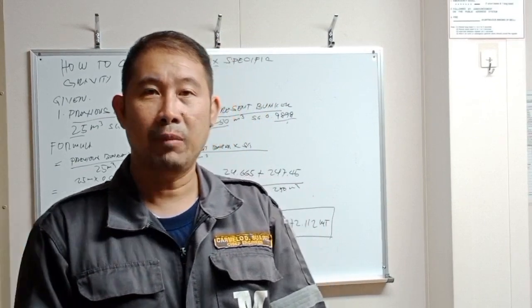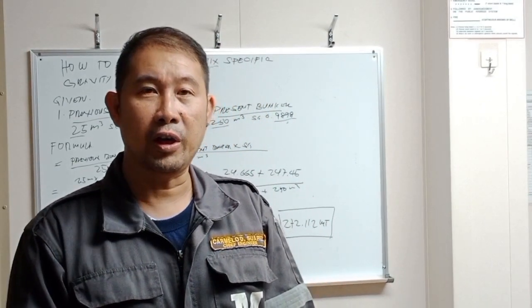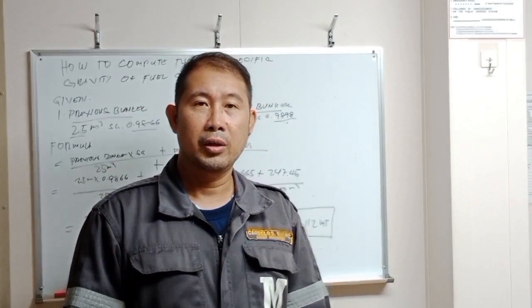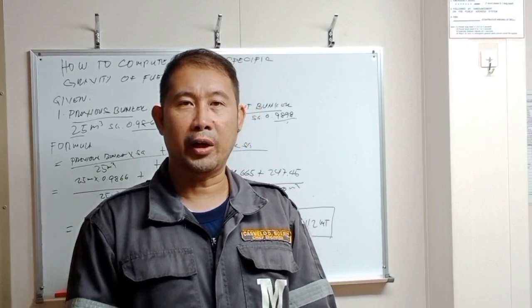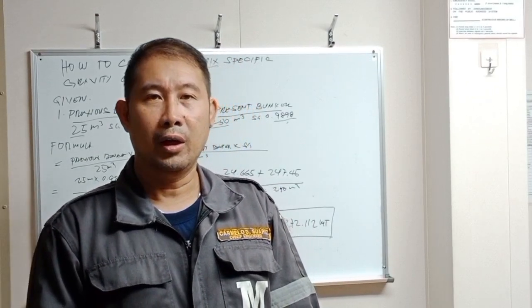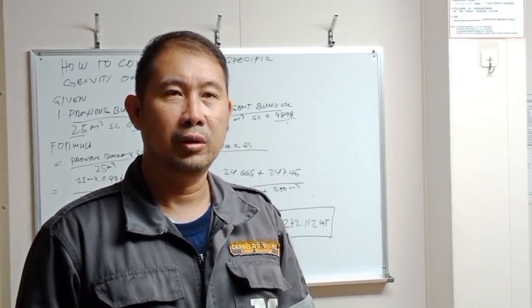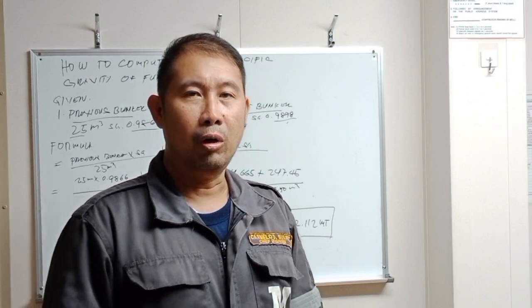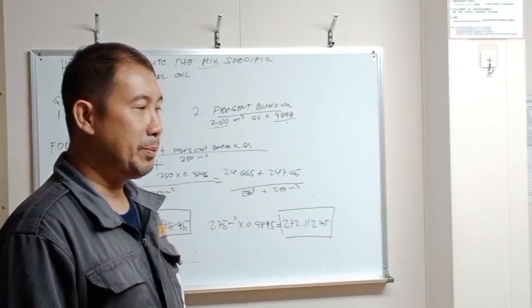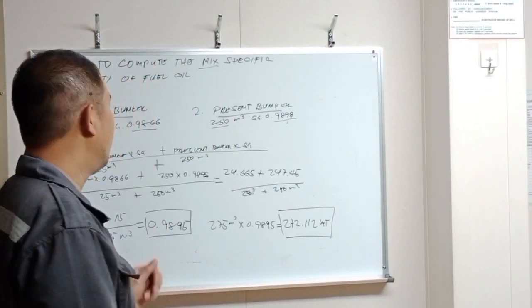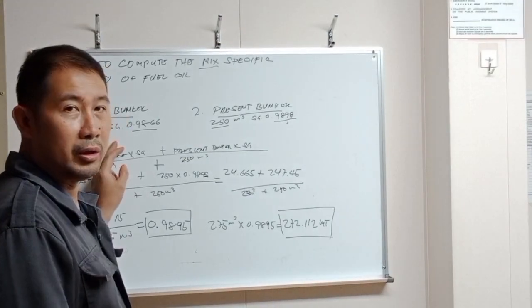The term for mixing bunker in this way is commingling. More than 10% commingling can create sludge due to the chemical reaction between two grades of bunker with different specific gravities.